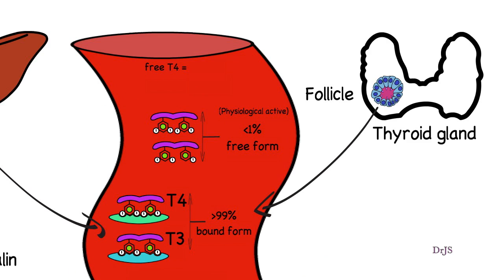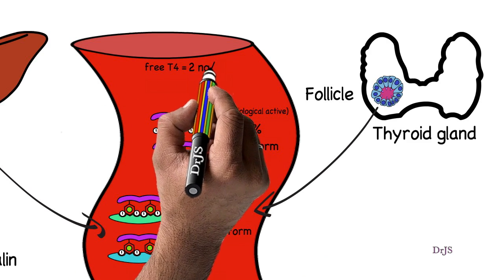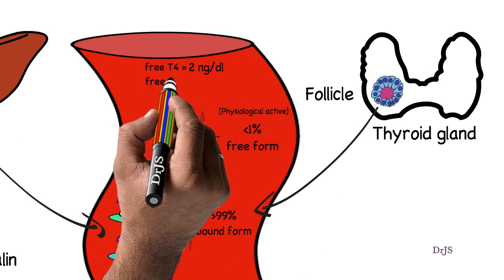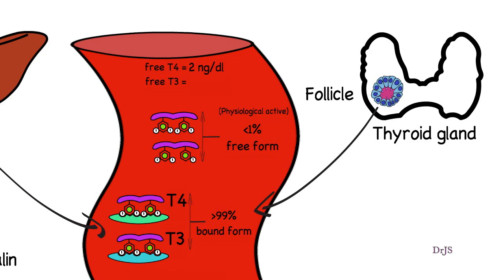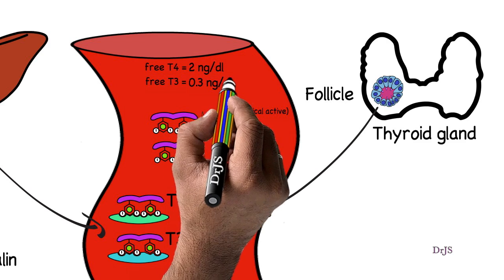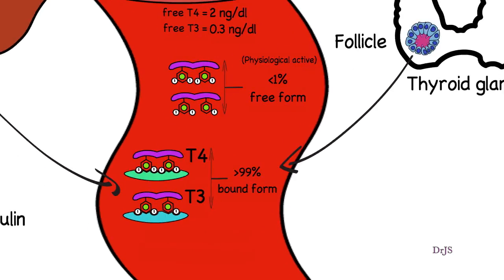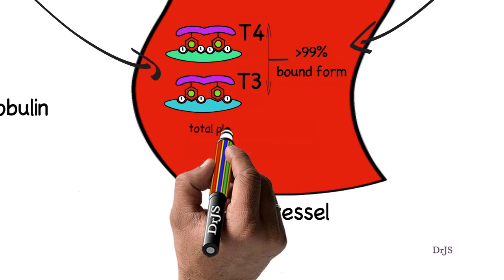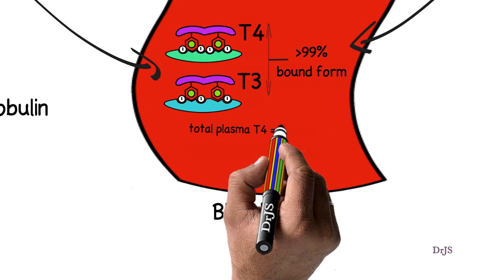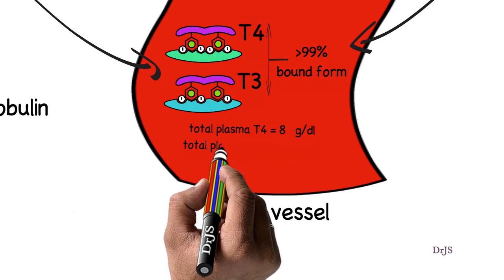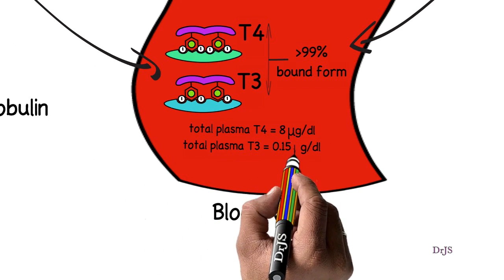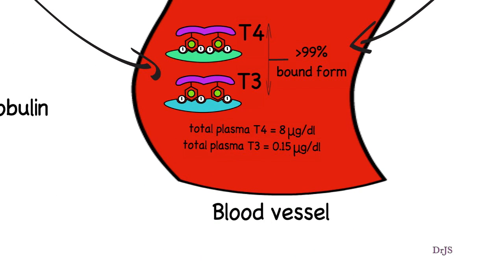Free T4 in plasma is 2 ng per deciliter and T3 is 0.2 ng per deciliter. The total plasma T4 is 8 ng per deciliter and T3 is 0.15 ng per deciliter.